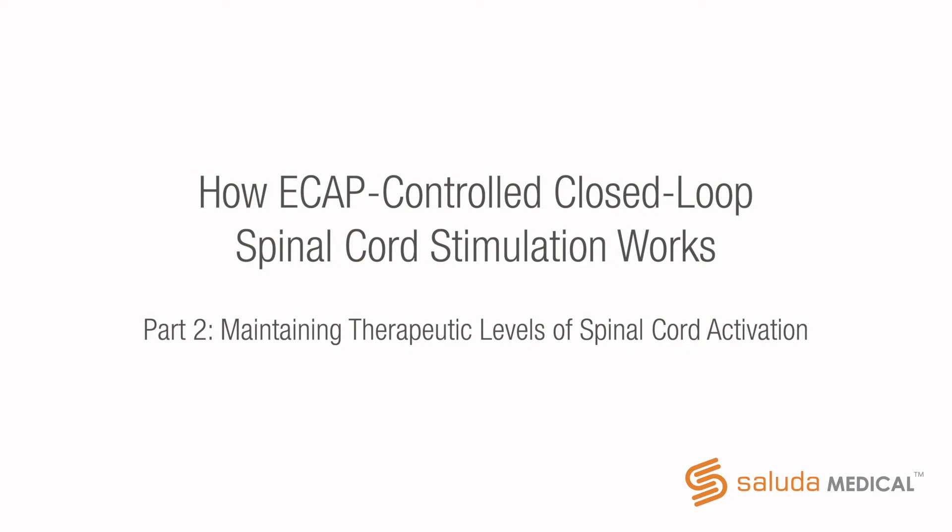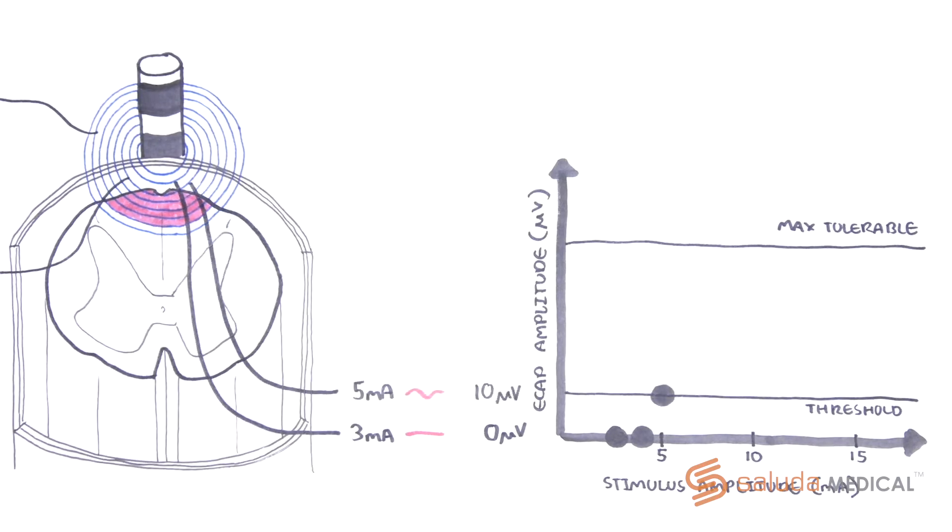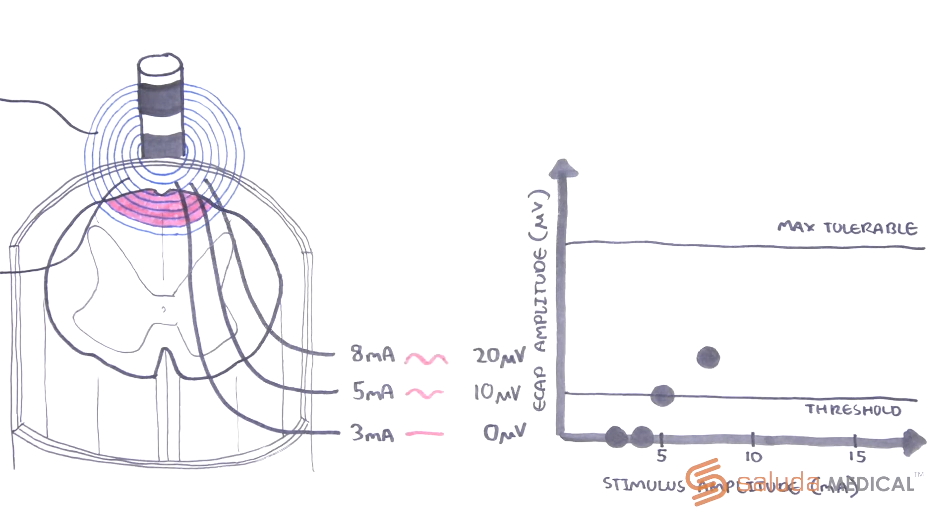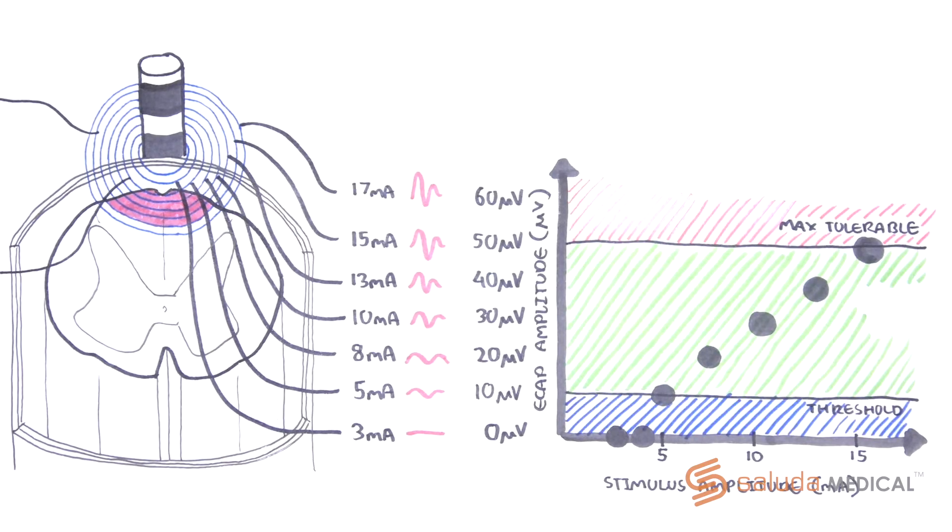This video is part 2 of how closed loop spinal cord stimulation works. In part 1 of this series we looked at how the electrical field generated around the spinal cord stimulation lead will activate dorsal column fibers and generate an evoked compound action potential or ECAP. We also reviewed how the ECAP can be used to define a therapeutic window for individual patients.